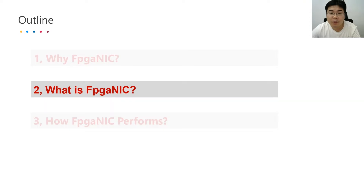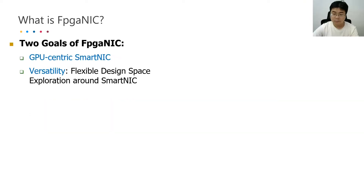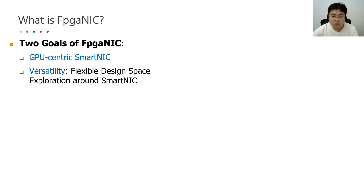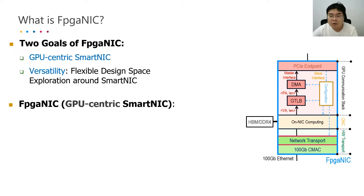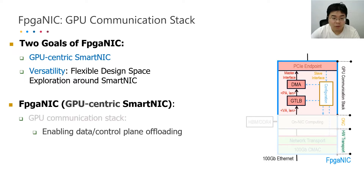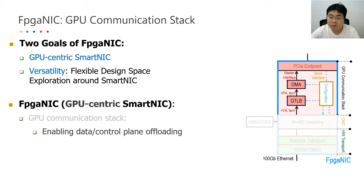Now let's talk about what FBGNIC is. The two goals of FBGNIC are GPU-centric smart NIC and versatility, which means FBGNIC allows flexible design space exploration around smart NIC. To achieve these two goals, FBGNIC consists of three components. The first component is the GPU communication stack, which enables control and data plane offloading.